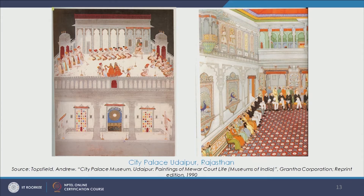These are some interesting images from Topsfield's book — a very famous book titled 'City Palace Museum Udaipur: Paintings of Mewar Court Life'. These are paintings from the book, and we see City Palace Udaipur where interior architecture is highlighted, court life is highlighted, and art and craft forms are highlighted in these paintings. We see the stained glass work, the emblem of the dynasty, and different kinds of space making elements. Here also we see all these distinct art and craft forms.